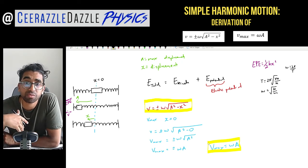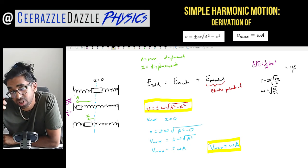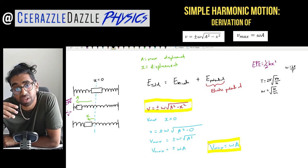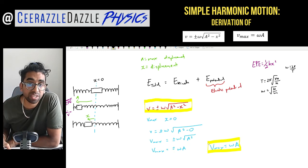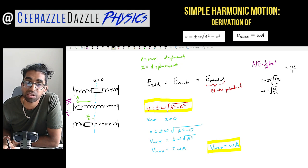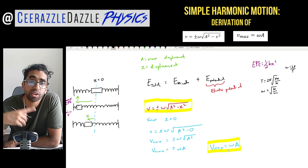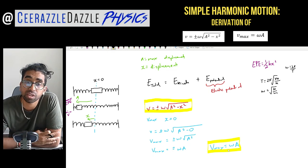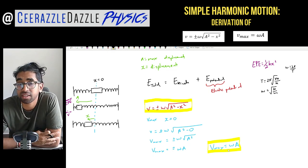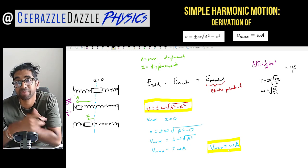That's it for another session of Surazzle Dazzle Physics. Make sure you like and subscribe to keep the channel going. Make sure you can prove v equals plus or minus omega times the square root of A squared minus x squared, and v_max equals omega A. Pause the video and go through it to back up your own notes. Ciao and goodbye!